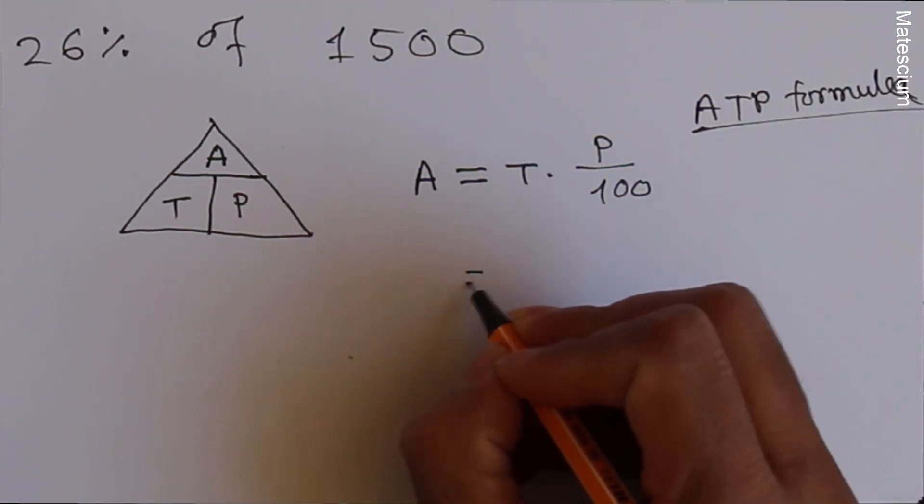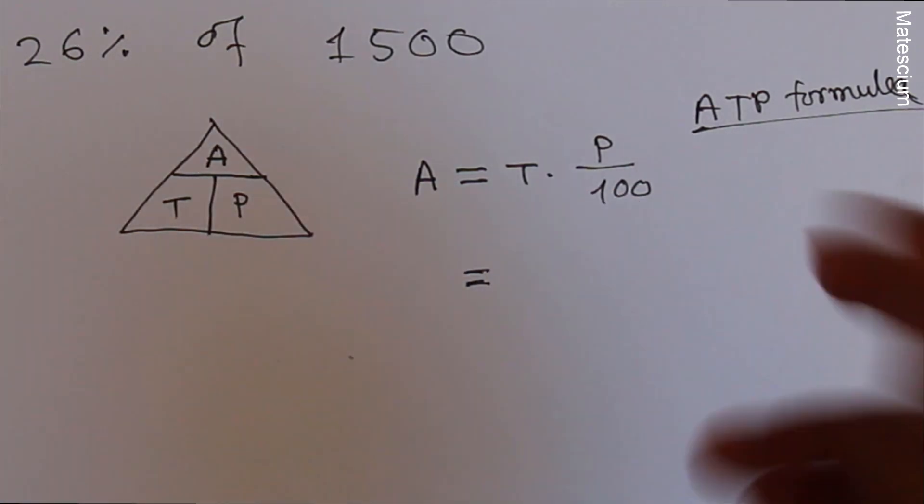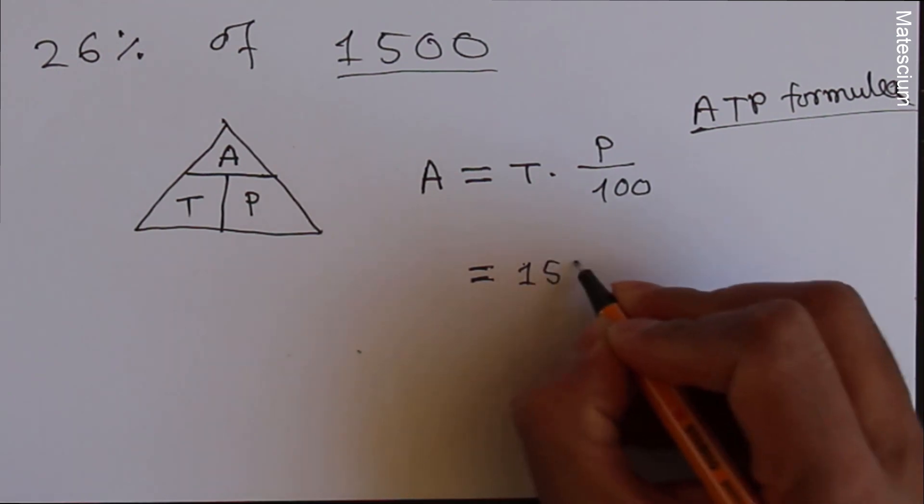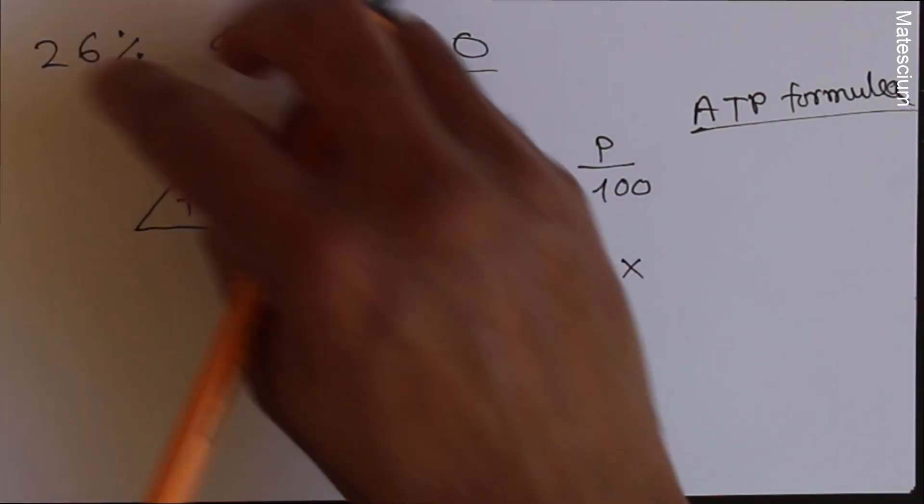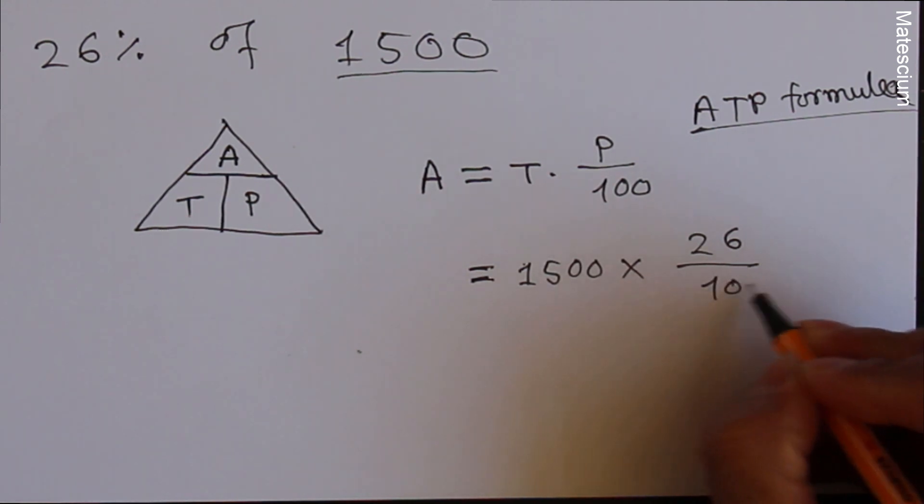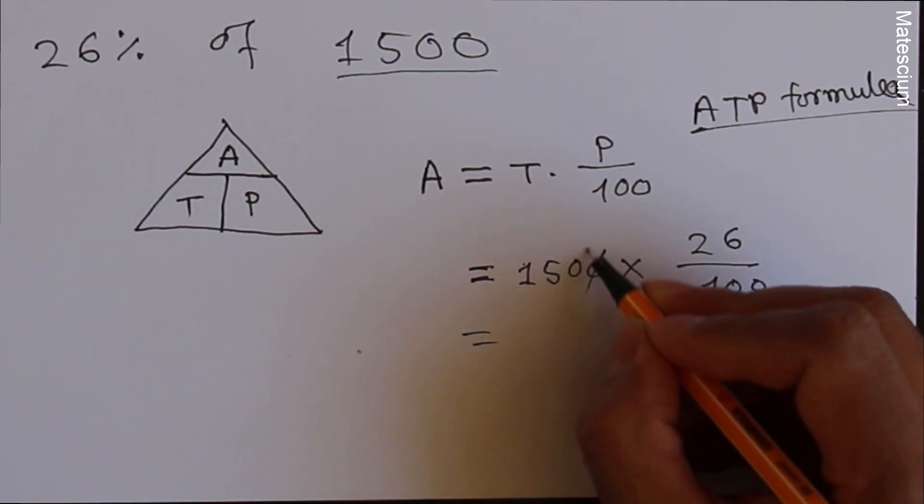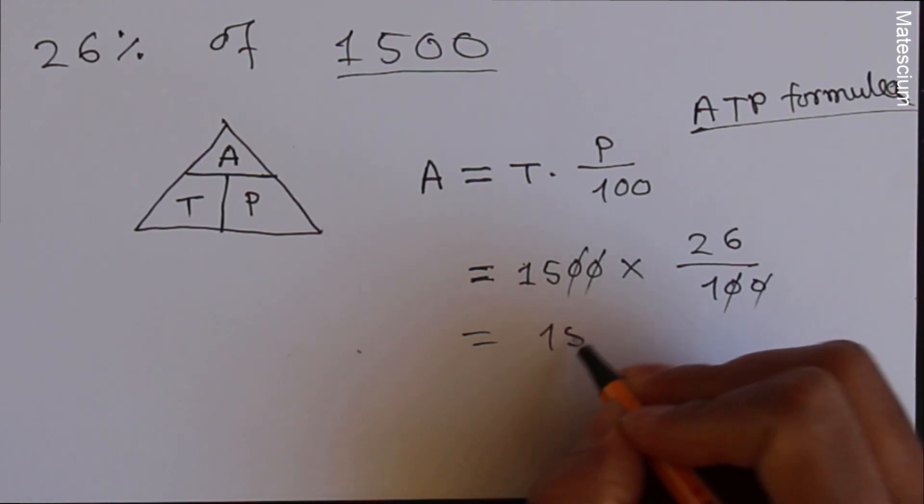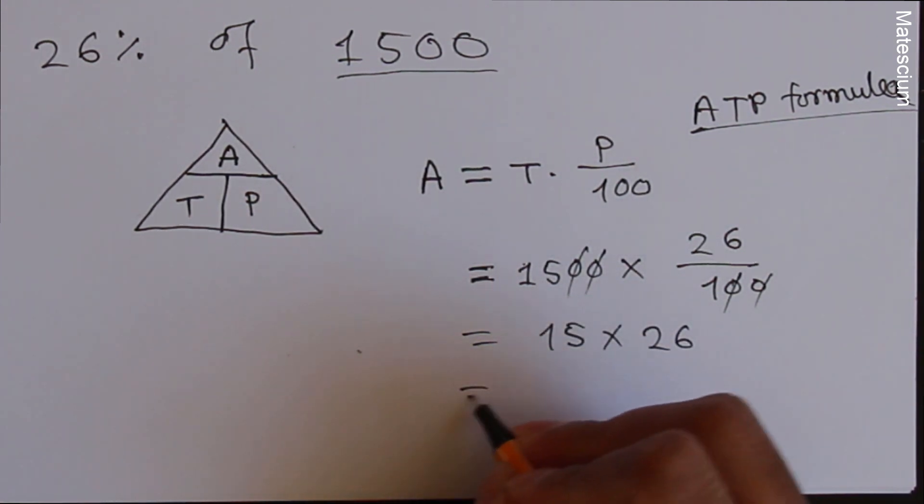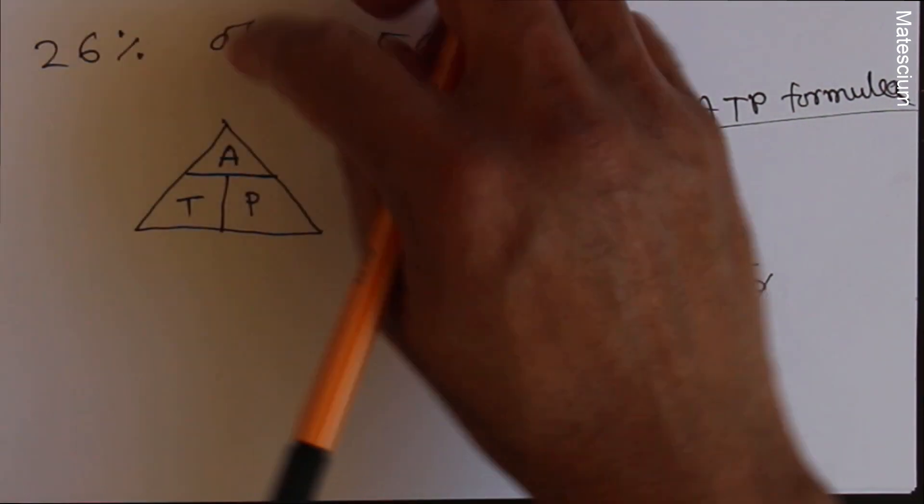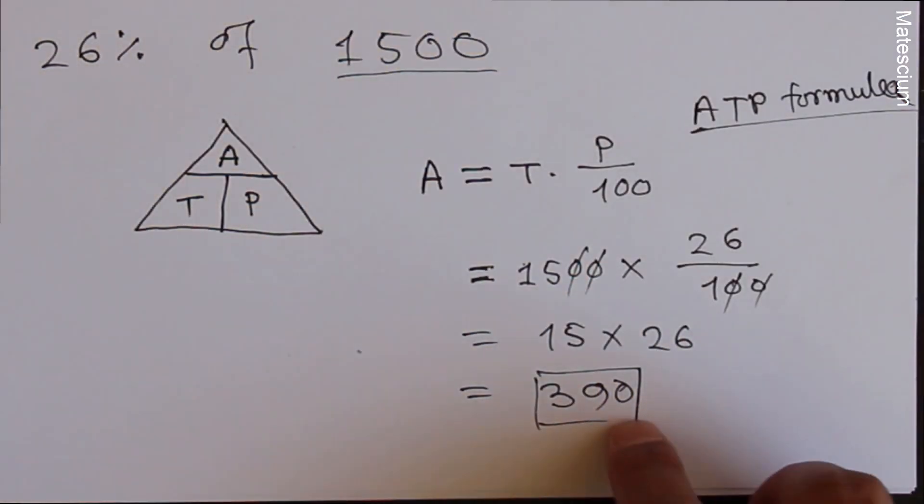If I place the value here, total value is 1500 times percentage is 26% over 100. So I can eliminate this 0, that 0, this 0, that 0. What remains is 15 times 26 which equals 390. That means 26% of 1500 is 390.